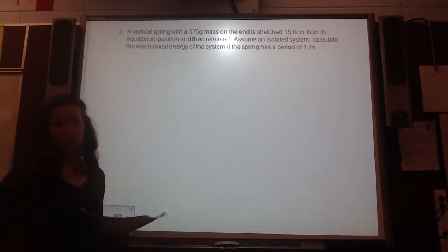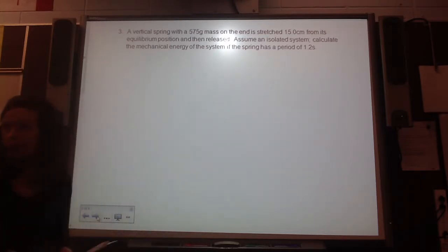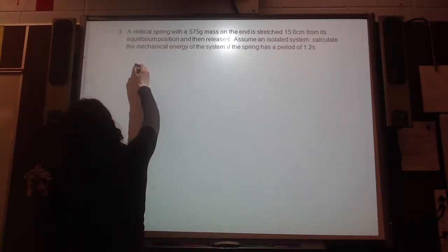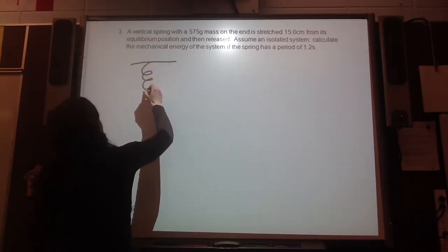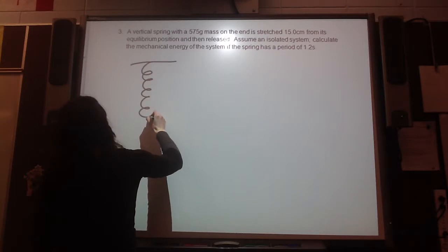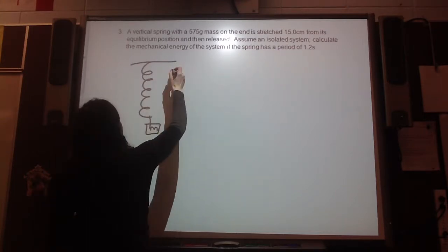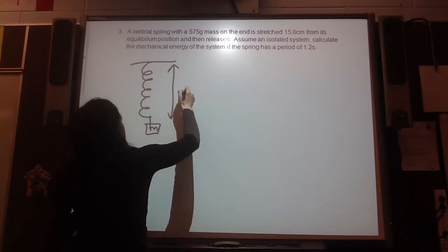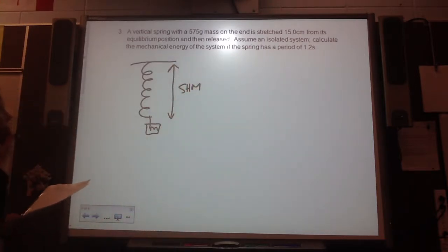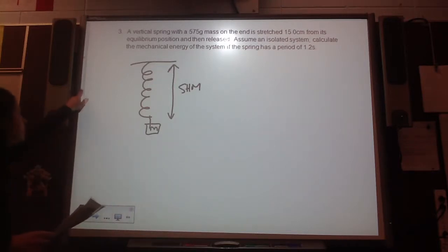So let's make a drawing of what's going on and then write down everything we know. So here's a vertical spring, so it's being hung, and it has a mass attached at the end. So we can say this is simple harmonic motion going on here. Now it's stretched 15 centimeters from its equilibrium.